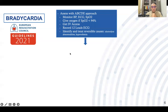During the ABCD approach, we monitor blood pressure, perform a 12-lead ECG, and check oxygen saturation. Give oxygen if saturation is less than 94%, start an IV line, record a 12-lead ECG, and if there are any reversible causes such as electrolyte imbalance, hypovolemia, or hypoxia, treat them accordingly.